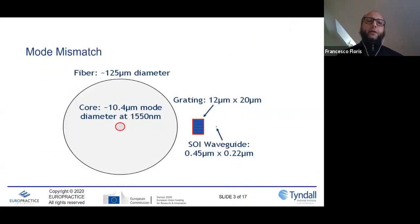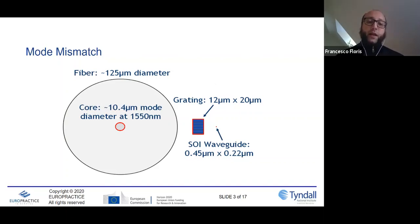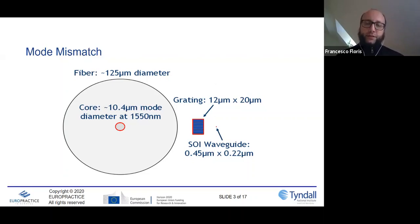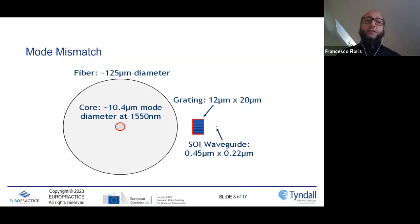Main problem: mode mismatch. We have a fiber with a core of the order of 10.5 microns and a mode field diameter around 10.4 microns. We want to shine the light running inside the core on a grating coupler, and the dimensions of the grating coupler are on average 12 by 20 microns. Our waveguides in SOI have geometrical dimensions around two orders of magnitude smaller with respect to the core of the fiber — we're talking 450 by 220 nanometers. So again, we have to face this mode mismatch.